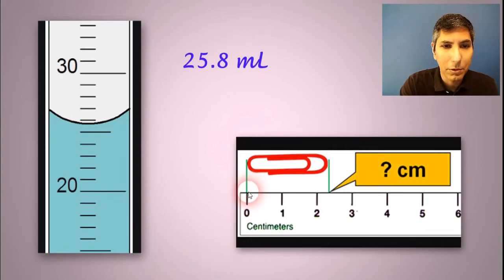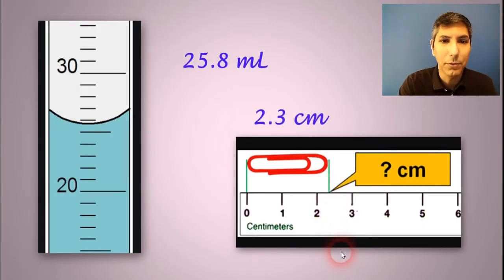If we have a paper clip and we're trying to measure it, same idea here. We have to measure it by reading between the lines. It looks like it's between two and three centimeters. So you have to estimate, we might say about 2.3 centimeters, something like that. So there we have the length of an object.